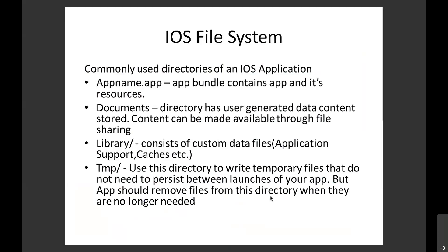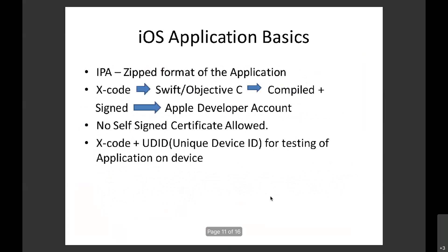For iOS application basics: apps use ZIP/IPA format, are developed in Swift or Objective-C using Xcode, and when compiled they are signed using an Apple developer account. By default, no self-signed certificates are allowed in the iOS environment. For installing in a staging environment, you require Xcode plus the Unique Device Identification (UDID). If you are interested in iOS development, you need a MacBook — some things simply won't work on Windows.